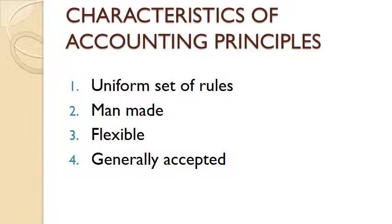The last characteristic is generally accepted. These principles are accepted by all accountants in the whole world, and they help in preparing our accounting statements and accounting records. This is done on three criteria. First is relevant — the information we present should be quite relevant in preparing our accounting statements. Second is objectivity — the information should be free from personal bias or judgment. And the last is feasibility — there should be no complexity or minimum cost; unnecessary cost should be avoided. All three criteria are very important while accepting these principles worldwide.